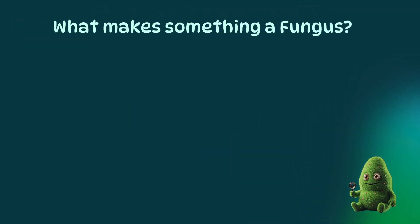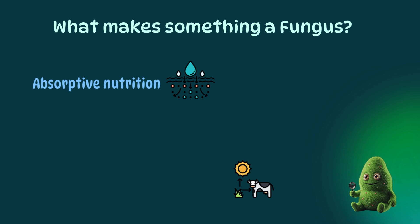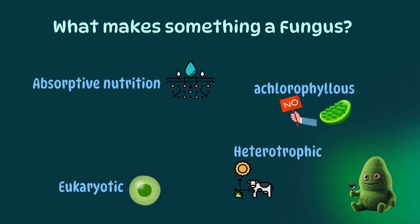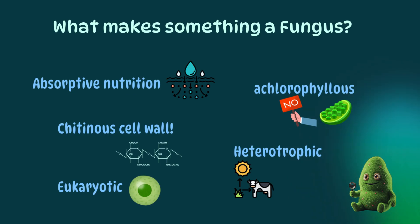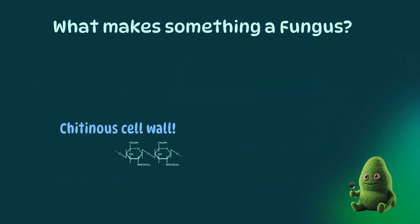Fungi belong to their own diverse and mysterious kingdom, made of wild shapes and features. But what makes something a fungus? It comes down to these five traits they all share: they use absorptive nutrition; unlike plants, they lack chlorophyll and they're heterotrophic, which means they don't make their own food. They're also eukaryotic, so they have a nucleus that distinguishes them from bacteria. And most importantly, they have chitin in their cell wall.